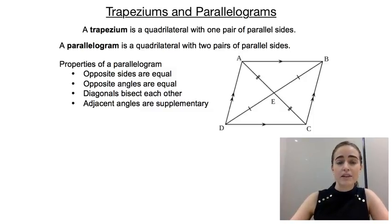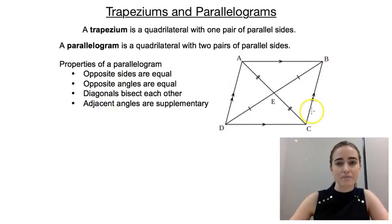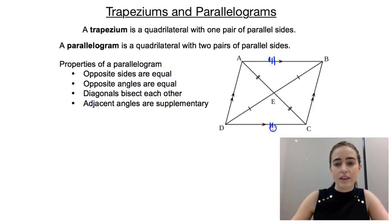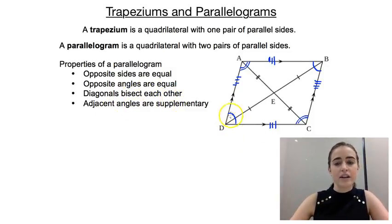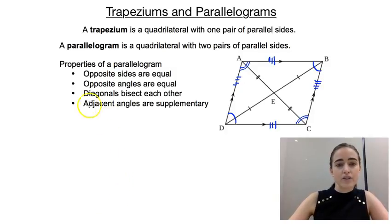A parallelogram is a bit more complicated. A parallelogram is a quadrilateral with two pairs of parallel sides — this one is parallel to this one, and this one is parallel to this one. The properties of a parallelogram, and you need to know these, are: opposite sides are equal, so this side is equal in length to this side; opposite angles are equal, so this angle is equal to this angle; the diagonals bisect each other — bisect means cut in half, so where they cross over they split each other in half; and adjacent angles are supplementary, meaning they add up to 180 degrees, because they're co-interior angles in those parallel lines.